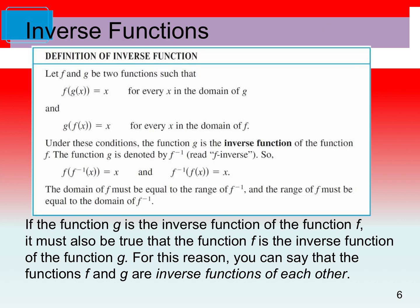The next page talks about the formal definition of an inverse function. In order to verify that something's a function, you take the composition f of f⁻¹ and it simplifies to x, and also f⁻¹ of f simplifies to x. Importantly, if g is the inverse function of f, it must also be true that f is the inverse function of g — so f and g are inverse functions of each other. You can't have a function that's the inverse of another without them being inverses of each other.